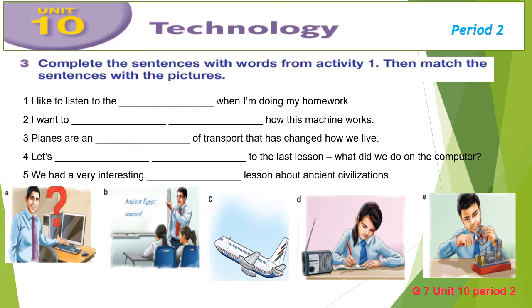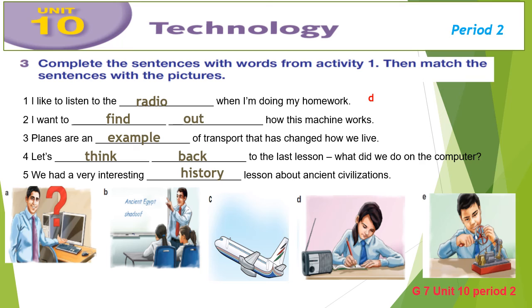I'll give you some time to read the sentences and choose the appropriate words. Let's take them one by one. 1. I like to listen to the radio when I'm doing my homework. 2. I want to find out how this machine works. 3. Planes are an example of transport that has changed how we live. 4. Let's think back to the last lesson — what did we do on the computer? 5. We had a very interesting history lesson about ancient civilizations. Now let's match these sentences with the appropriate pictures: 1 – picture D, 2 – E, 3 – picture C, 4 – picture A, and finally 5 – picture B.